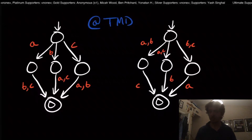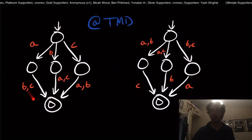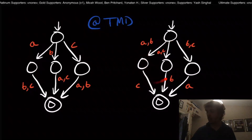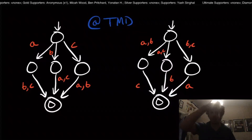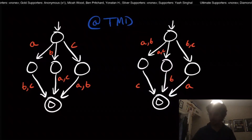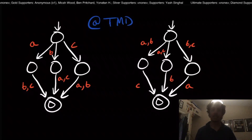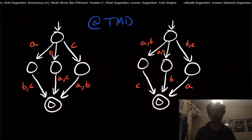Hi and welcome to another edition of Easy Theory. We're going to continue our lecture series from where we left off. Today I wanted to talk about a problem that was sent to me by user TMD on my Discord server — link in the video description. We were just talking last time about how to convert an NFA to a DFA using the power set construction.